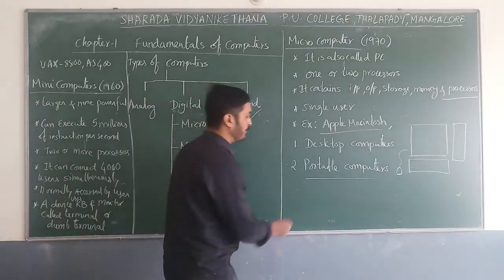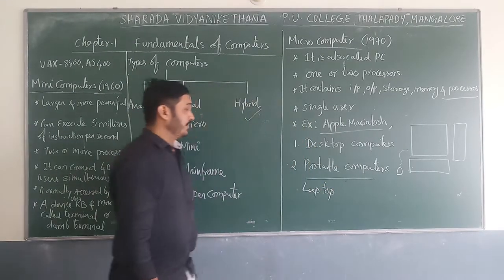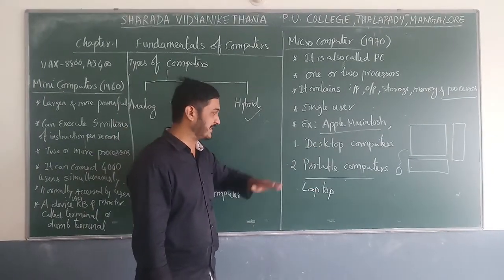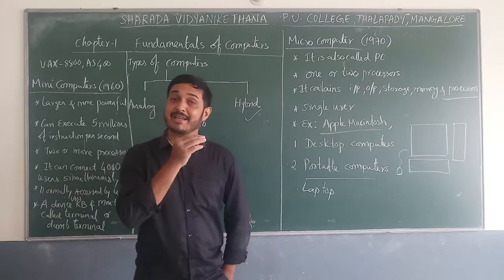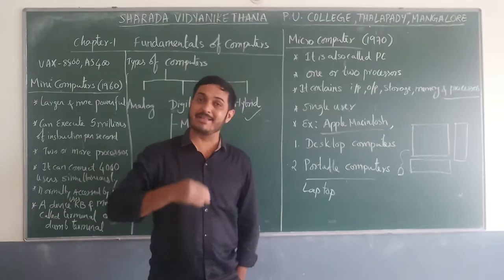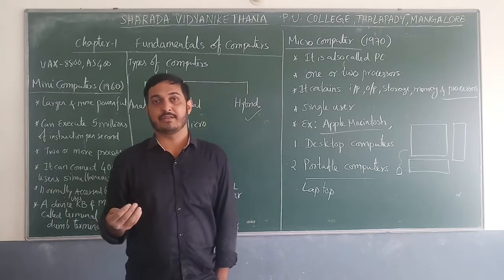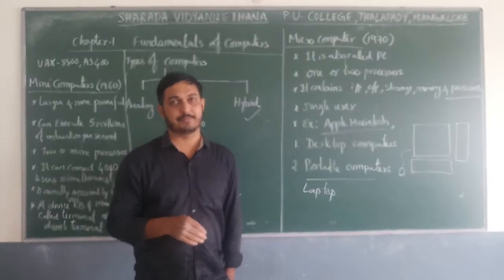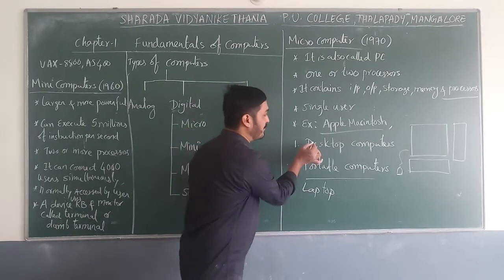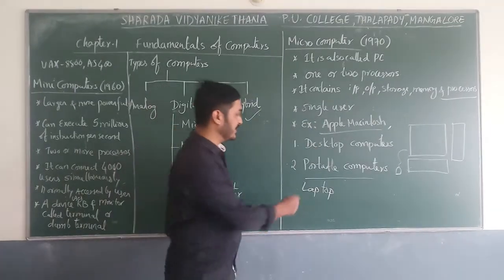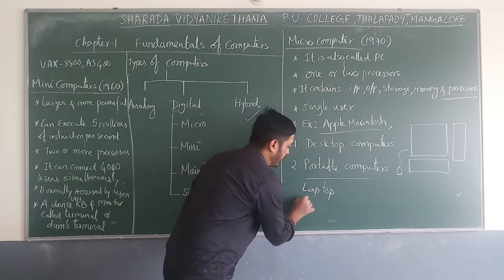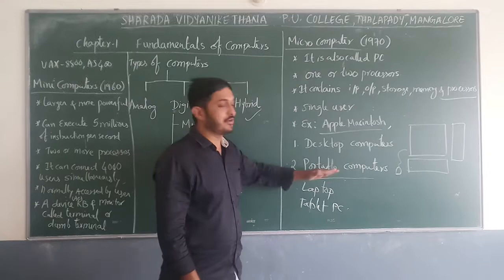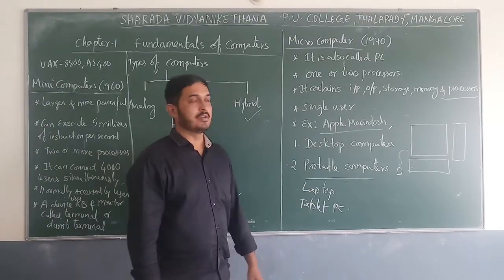The second type is portable computer, with the laptop as an example. The processing power of a laptop and desktop are the same. Portable means we can carry it from one place to another and it is small compared to desktop computers. Under portable computers, another example is tablet PC.